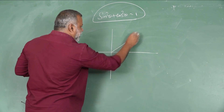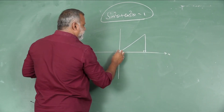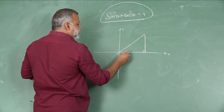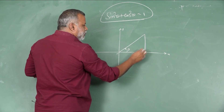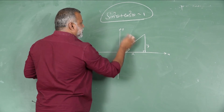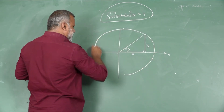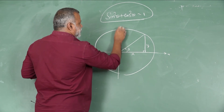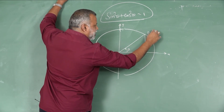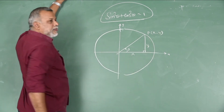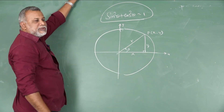Here is a very basic diagram. We have the x-axis and y-axis. We consider a circle, and on that circle we take a point P with coordinates (x, y). The distance from the origin to P is R.